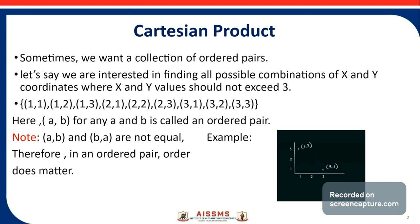One important note: (a, b) and (b, a) are not equal. To understand why, look at the graph — the point (1, 3) and the point (3, 1) are clearly different locations. Therefore (a, b) and (b, a) are not equal, and hence it is called an ordered pair — order does matter.